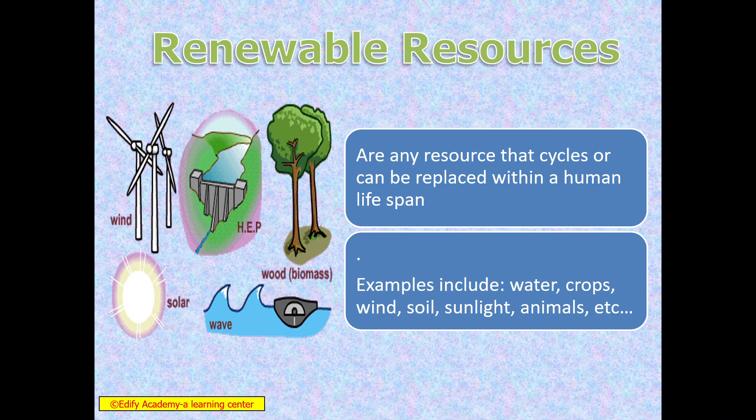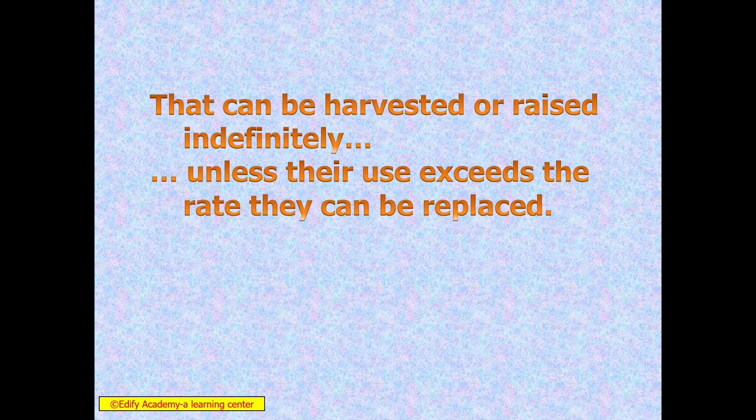We can see where renewable resources are used: windmills, HEP (hydroelectric power), wood as biomass, wave for MHD, different forms of devices, and solar energy for the photovoltaic cell. They can be harvested or raised indefinitely, unless the use exceeds the rate at which they can be replaced. It all depends upon demand and supply. Otherwise, we can harvest and raise them indefinitely — like solar rays, solar energy, water, and wind energy.